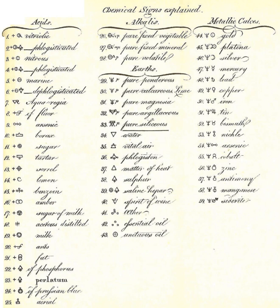Western alchemy makes use of the hermetic elements. The four basic elements and the symbols used for these are Air, Earth, Fire, and Water.